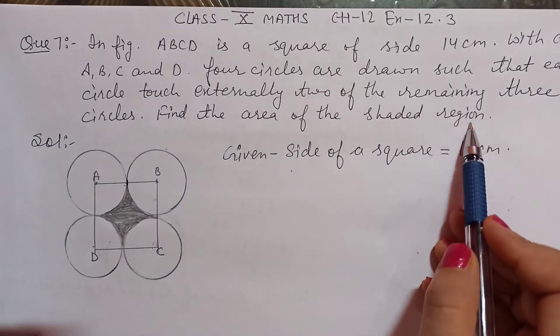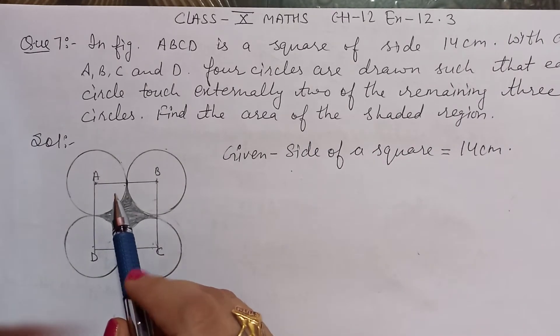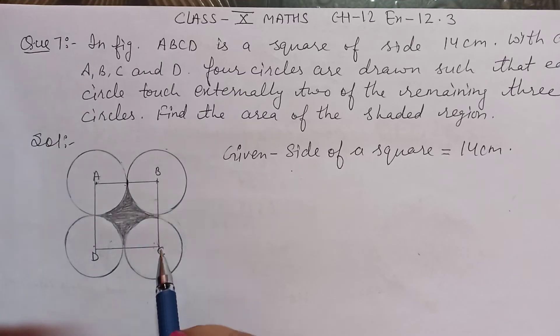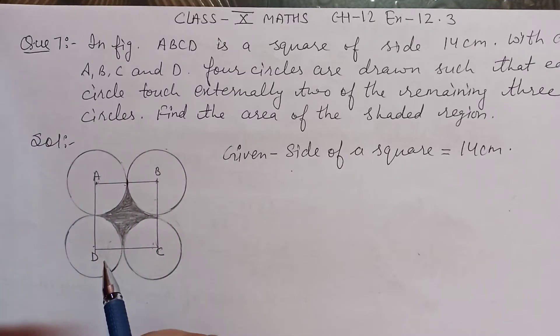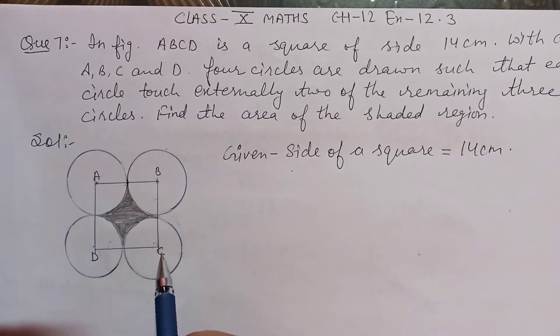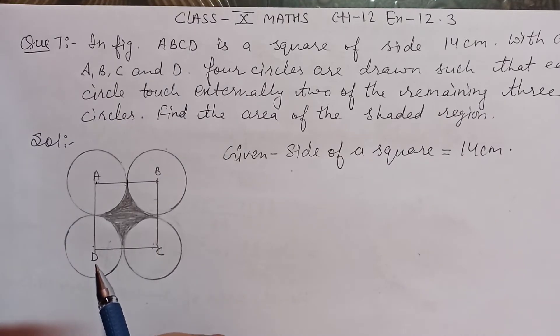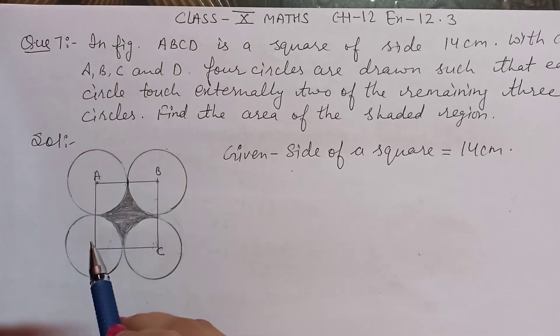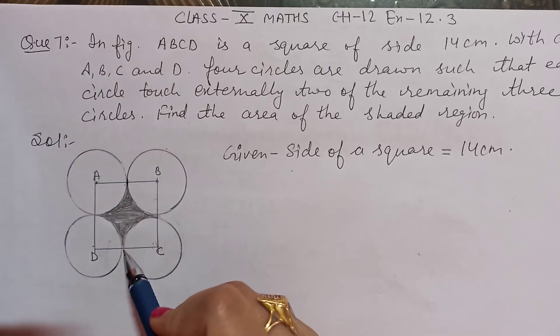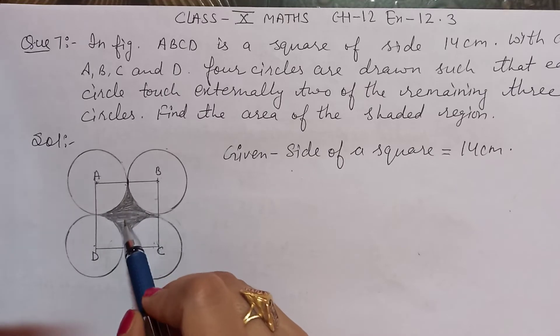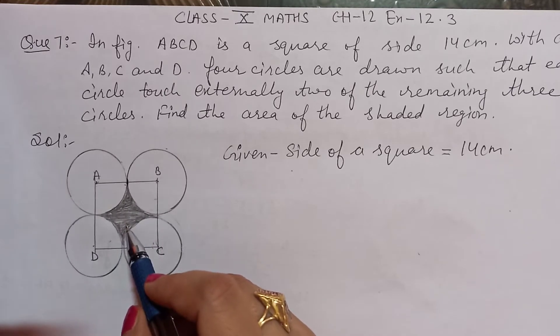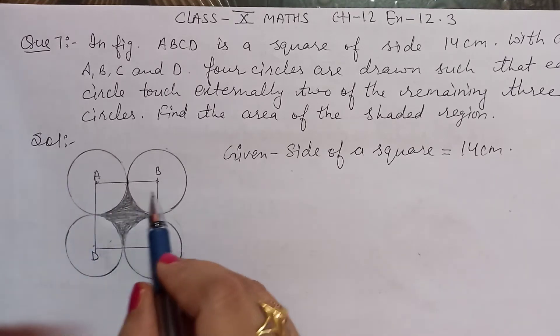the area of the shaded region. You have ABCD is a square and A, B, C, D is the center of circles. You have a circle formed, the other two circles touch the other side of the square and underneath you have a shaded area. So you have to find the area.